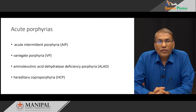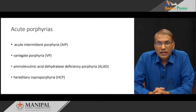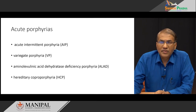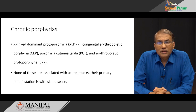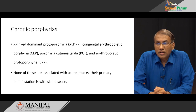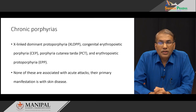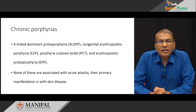Examples of acute porphyrias include acute intermittent porphyria, variegate porphyria, ALA dehydratase deficiency porphyria, and hereditary coproporphyria. Unlike the acute category, chronic porphyria will not have very severe manifestations and is not very disturbing to the patient. Examples of chronic porphyrias include X-linked dominant protoporphyria, congenital erythropoietic porphyria, porphyria cutanea tarda, and erythropoietic protoporphyria. None of these are associated with acute attacks; some may present with simple skin rashes.